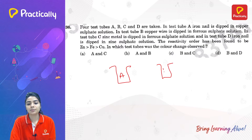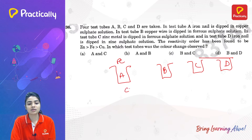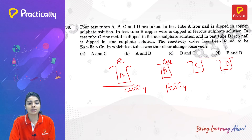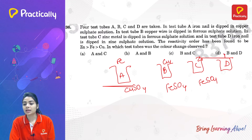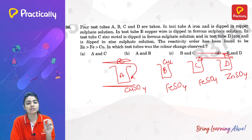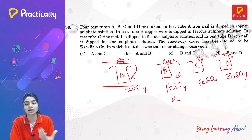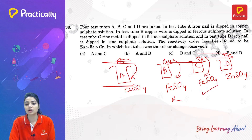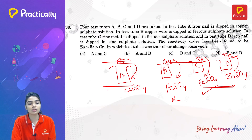Four test tubes: A has an iron nail in CuSO₄ solution, B has a copper wire in FeSO₄ solution, C has zinc metal in FeSO₄ solution, and D has an iron nail in ZnSO₄ solution. Iron displaces copper in A (iron is more reactive than copper); copper cannot displace iron in B — no color change. Zinc displaces iron in C, changing the solution color. Iron cannot displace zinc in D (zinc is more reactive). So only A and C show a reaction — answer is A.